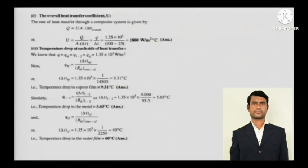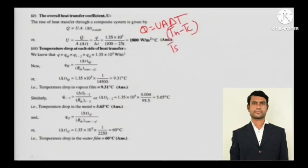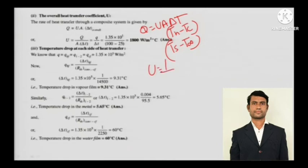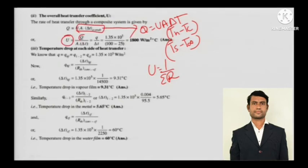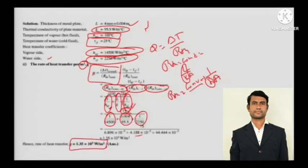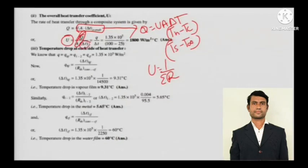For the overall heat transfer coefficient U: the rate of heat transfer through a composite system is given by Q equals U times A times delta T, where delta T is T_hot minus T_cold. The overall heat transfer coefficient U equals 1 divided by the summation of all resistances. Since Q/A is already known from the previous part and delta T is known, U can be solved directly by simple arithmetic.